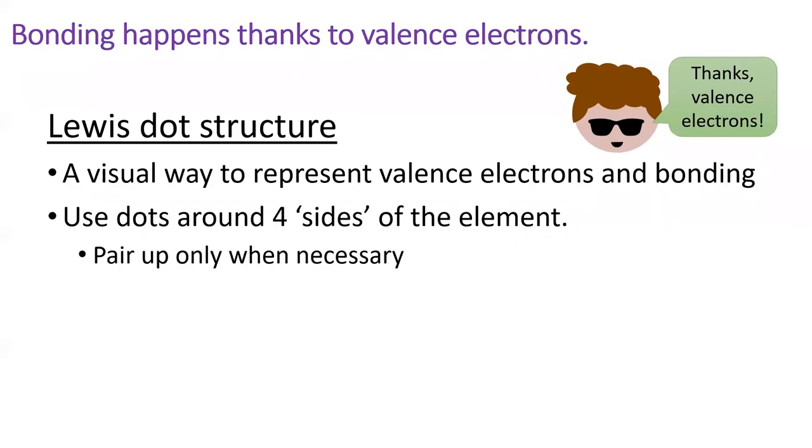Without valence electrons, none of the three kinds of bondings would be possible. Valence electrons are so important that we have a visual way to represent the number of valence electrons around an atom, called the Lewis dot structure.